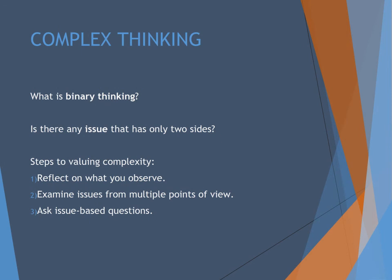When we seek complexity, we have to acknowledge that there are very few binaries in the world. Binary thinking is thinking in black and white, right and wrong, good and evil, etc. In academic writing, there really is no such thing. The steps to developing a complex worldview are, first, simple reflection on what you observe — really take the time to pay attention, and you might be surprised how quickly those binaries break down. Then, start to examine issues from different points of view. Identify an issue that is close to your heart and think about how many different opinions there are on it. At that point, you can start developing issue-based questions, which we'll call research questions later on.